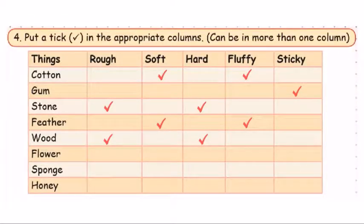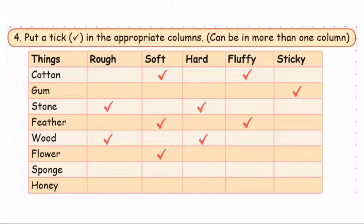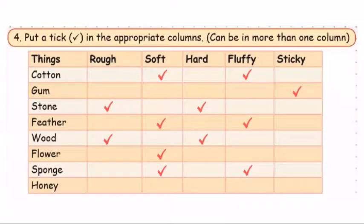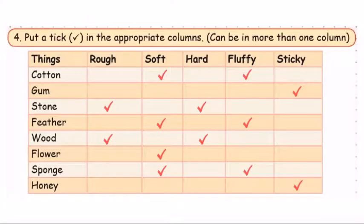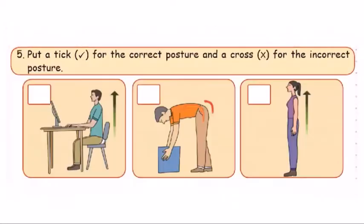Sponge is soft and fluffy. Honey is sticky — it is very thick, so you can tick it as sticky.